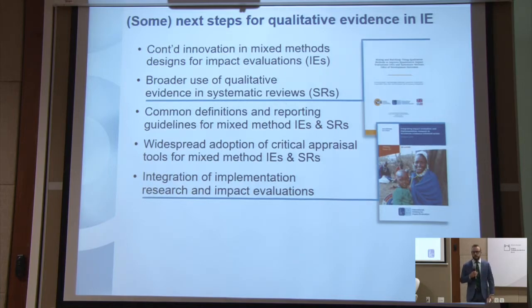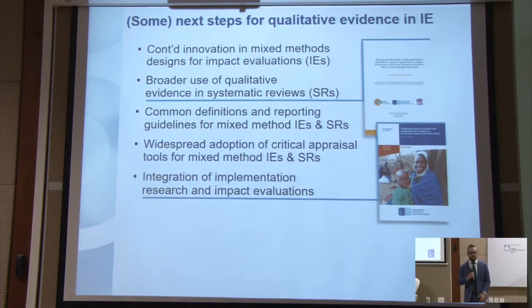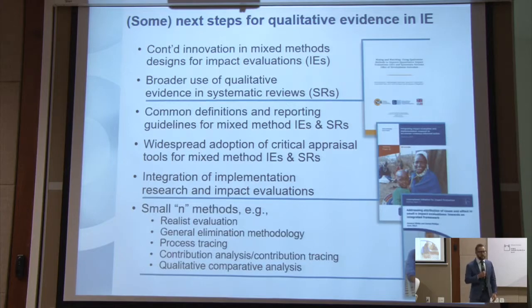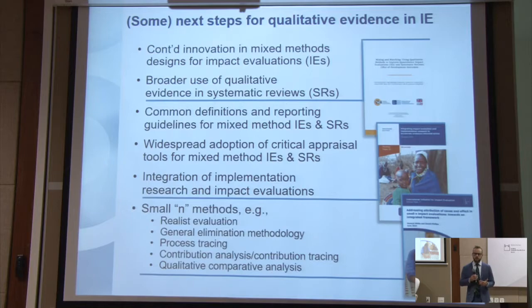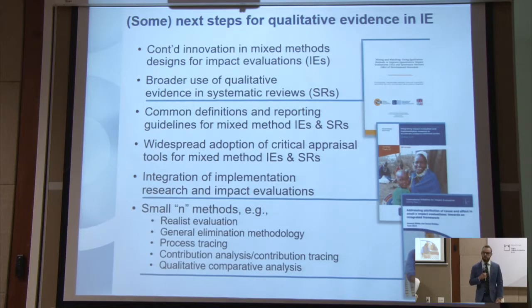There's another working paper on the 3IE website that proposes some ideas for how those kinds of methods can be combined so that even if you are trying to understand implementation issues in the short term, you also end up with the data you need to assess impact. Additionally, there are other methods to look for reasons why an effect occurred even when you don't have a large sample size: realist evaluation, general elimination methodology, process tracing, contribution analysis or contribution tracing, and qualitative comparative analysis.